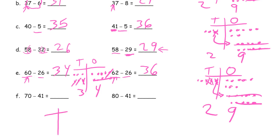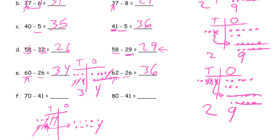70 minus 41. Tens and ones — I set up 7 tens and no ones. I don't have any ones to cross out, so I have to break up one of those tens into 10 ones. I can subtract 1 one, and then I still have to subtract 4 tens. What do I have left? 29.